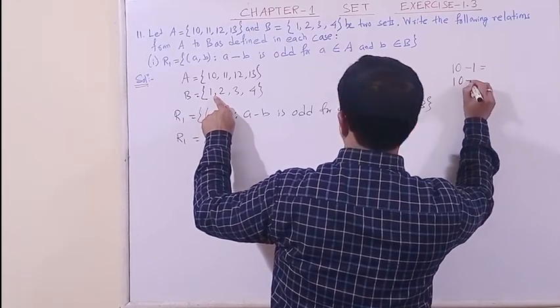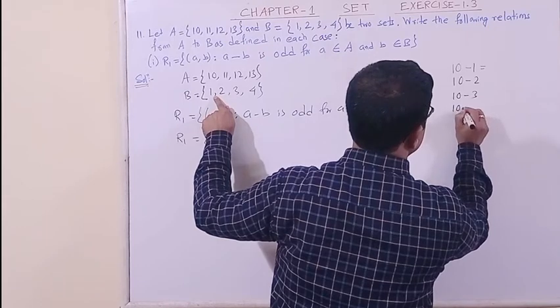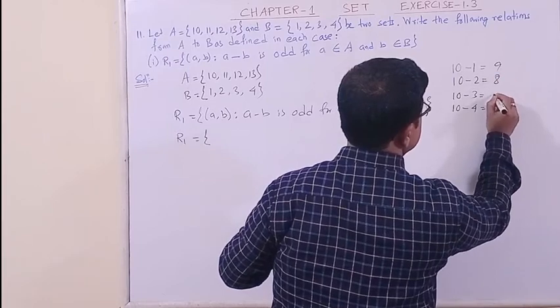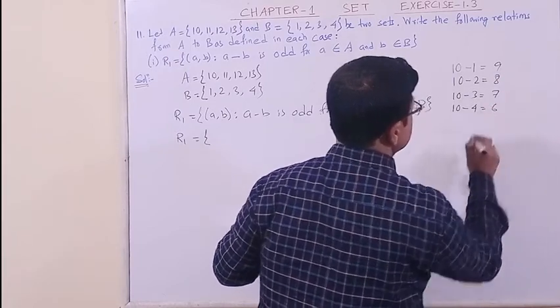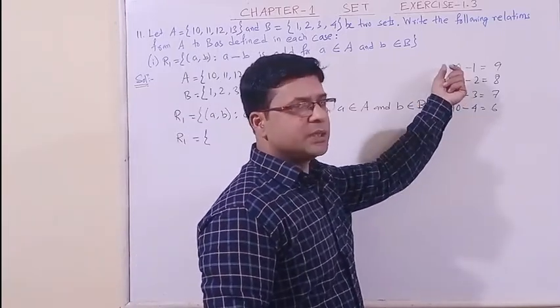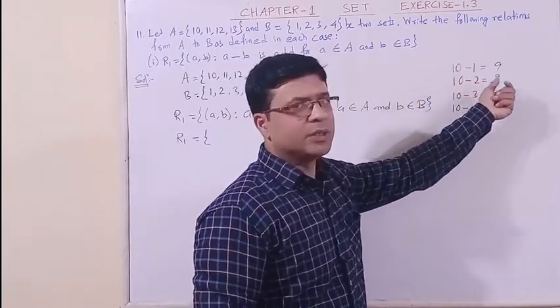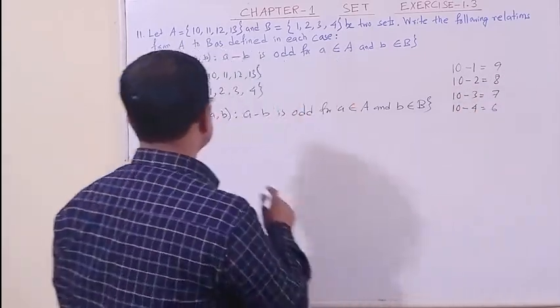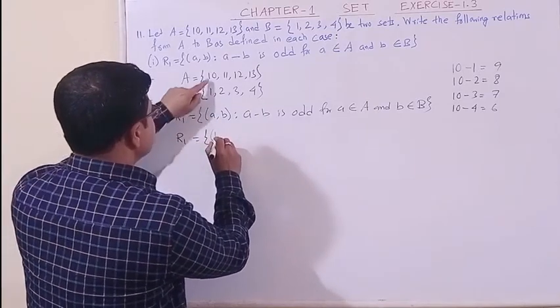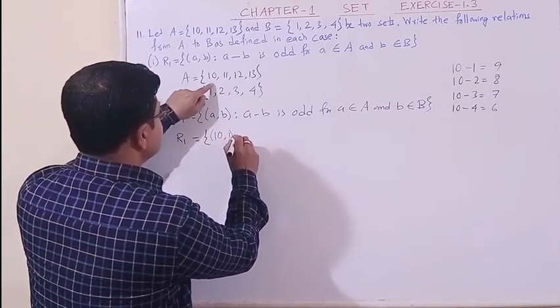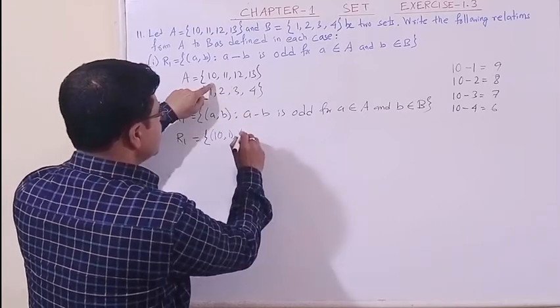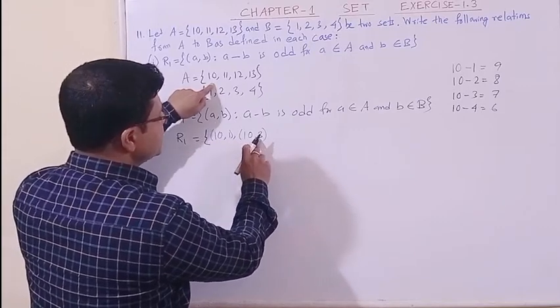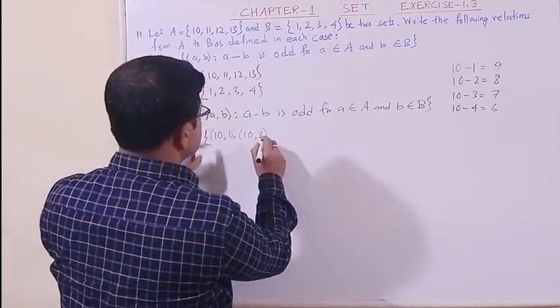10 minus 1 is 9, 10 minus 2 is 8, 10 minus 3 is 7, 10 minus 4 is 6. Now among these, which are odd? 10 is an even number. Even minus odd is always odd. So 10 minus 1 and 10 minus 3 will be odd.